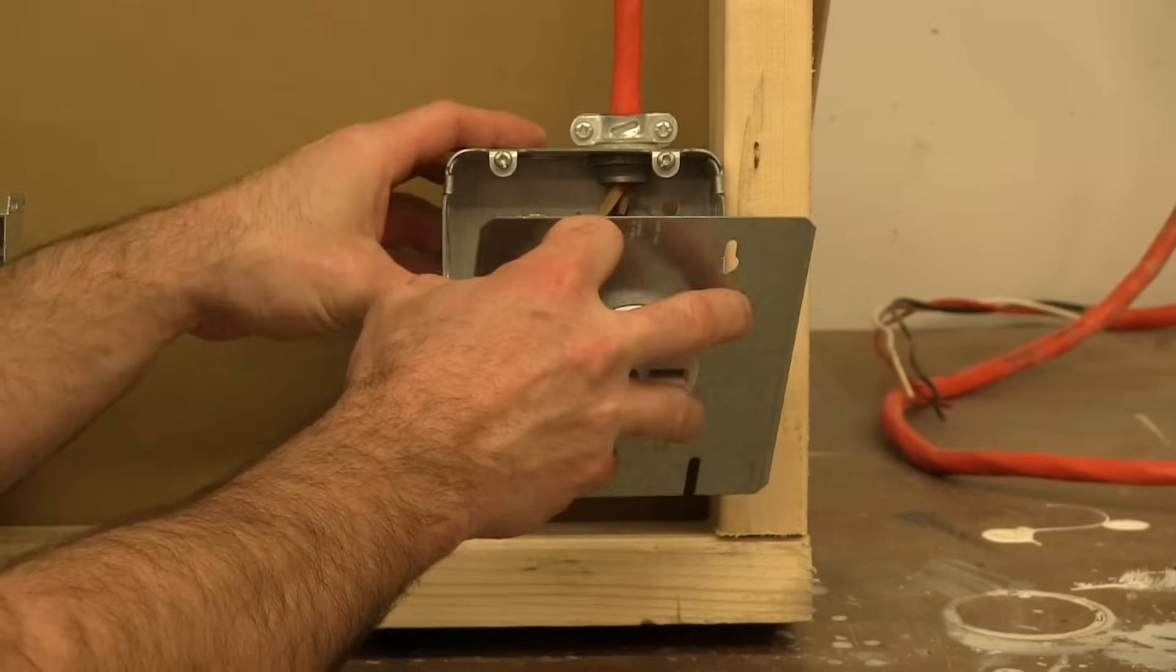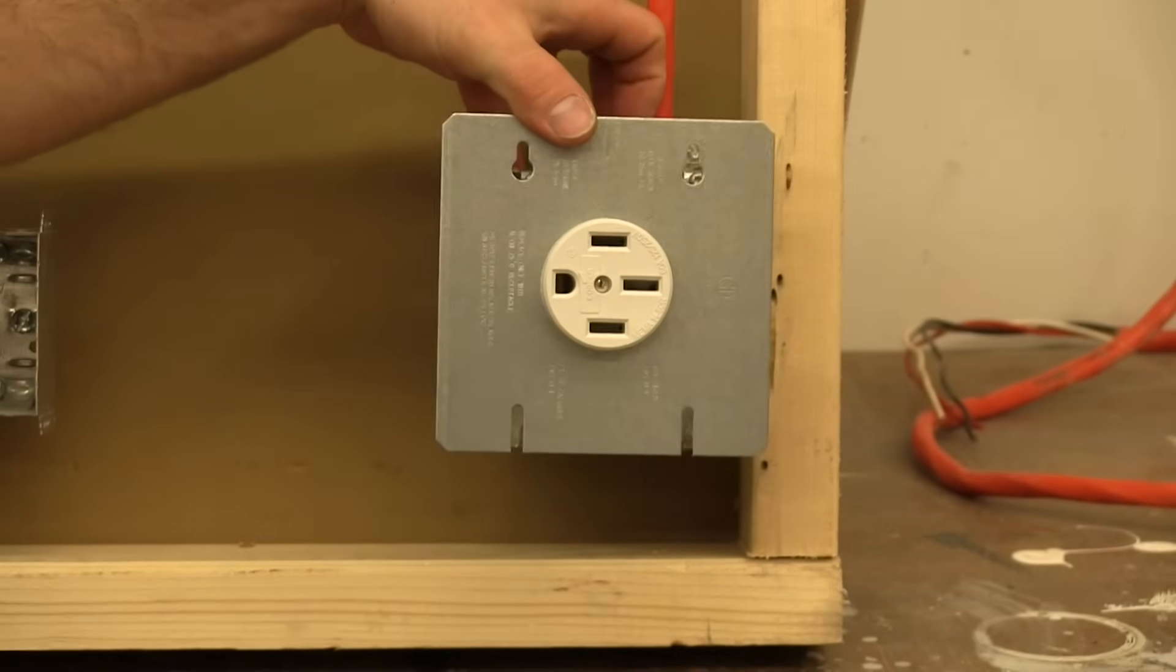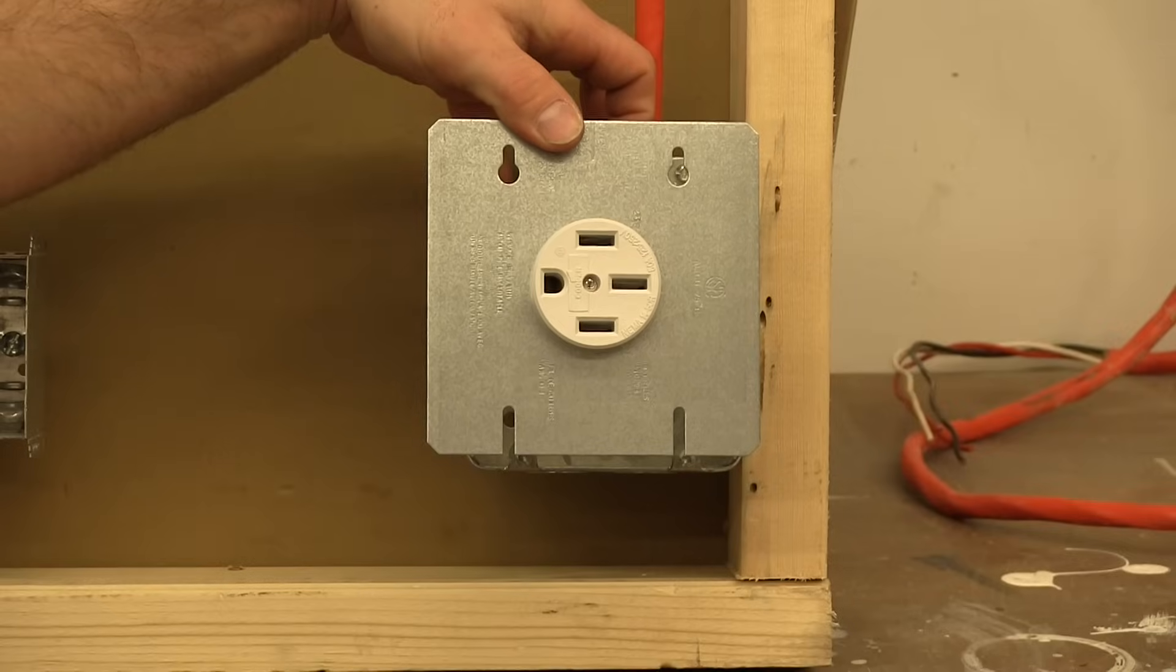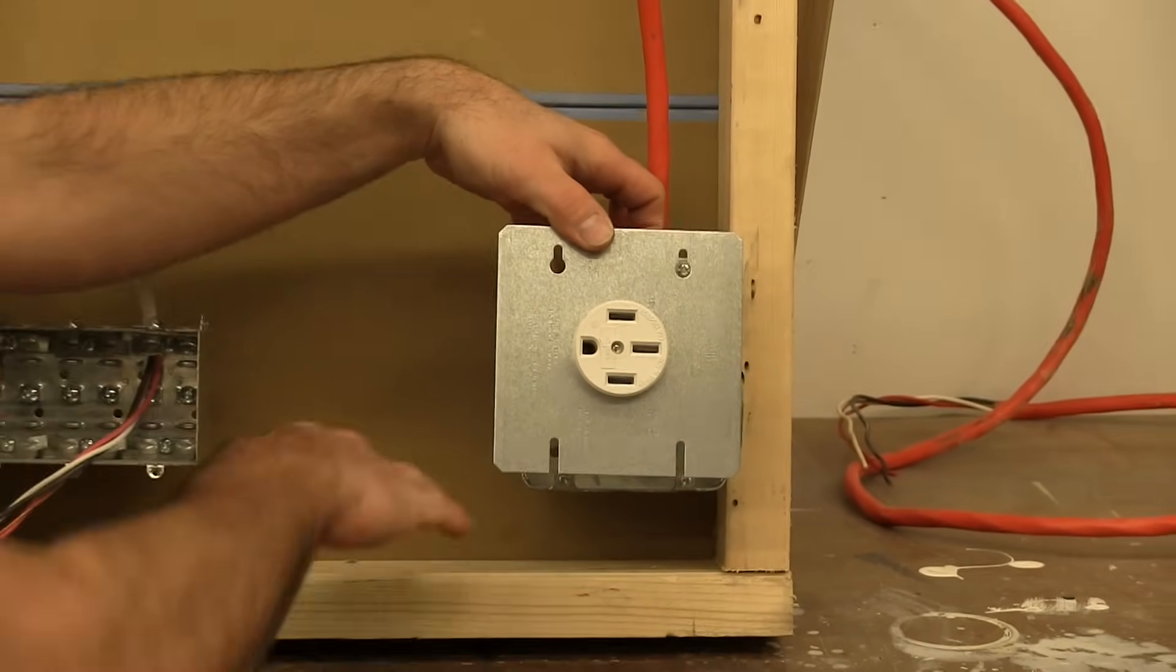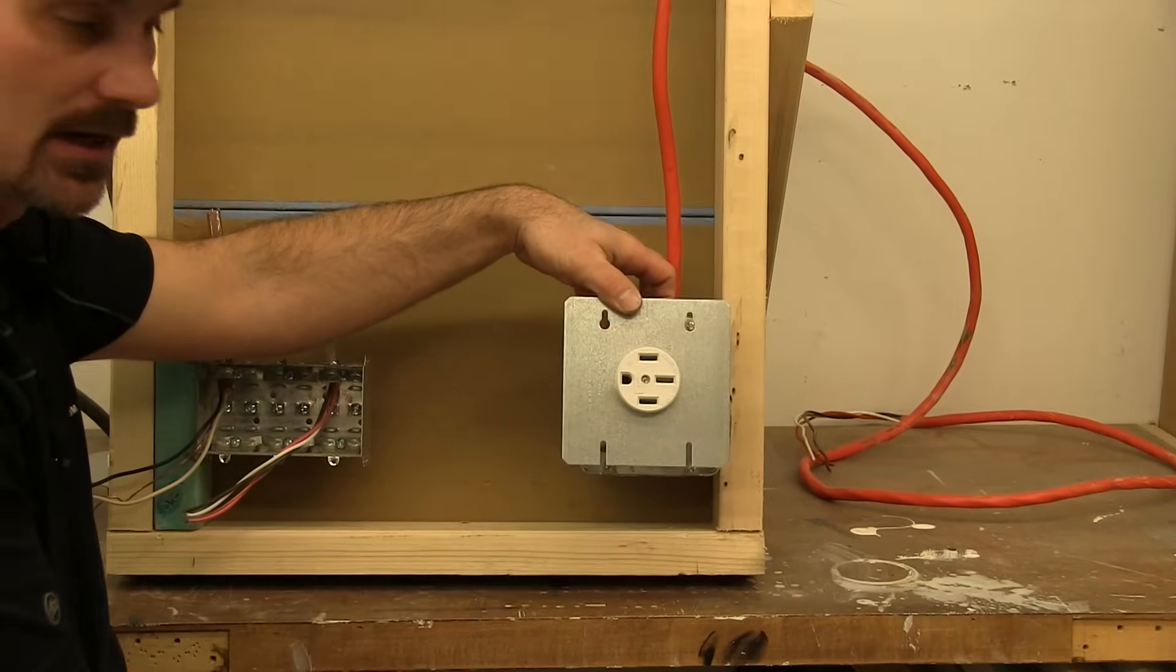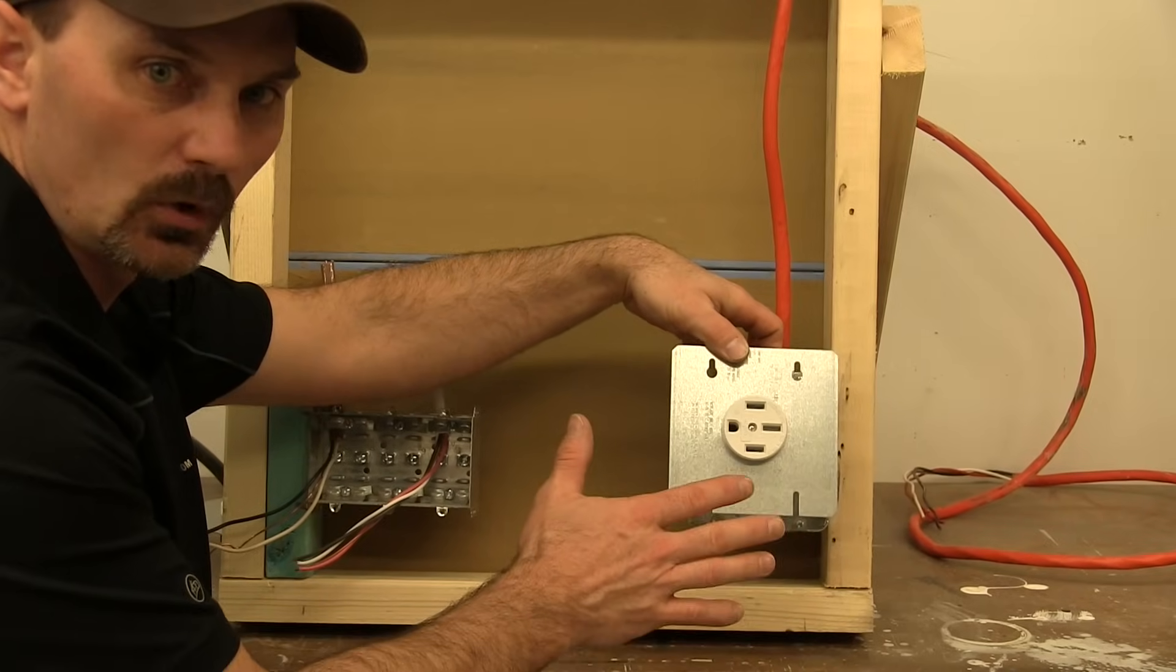Okay so when you're mounting your box, this electrical box or this plug, you want to get your orientation right always. So typically on a range you're going to have it low in the wall like down to the floor so that all this stuff kind of fits in behind the drawer area. Typically the drawer in the bottom of your stove doesn't go all the way to the wall.